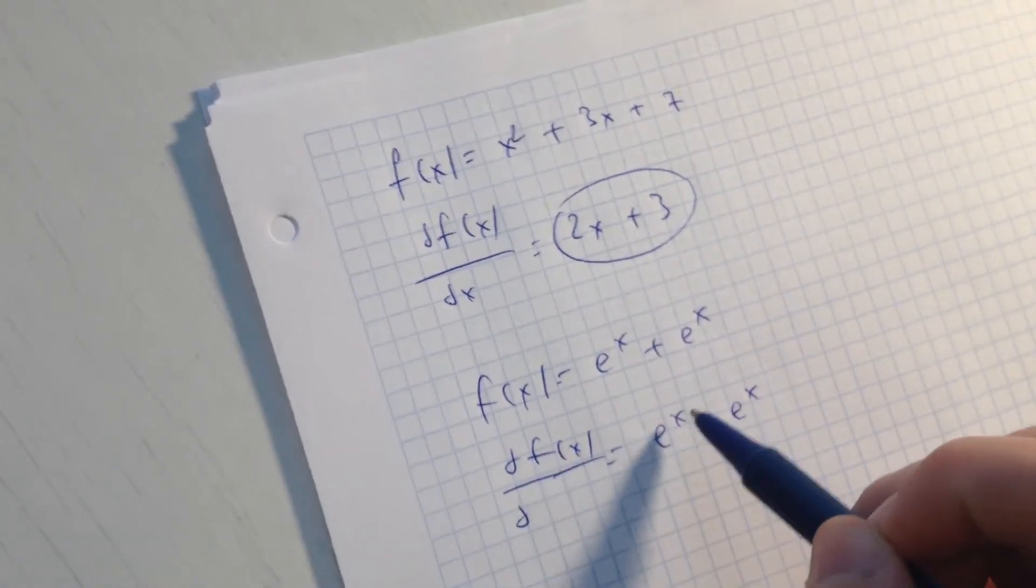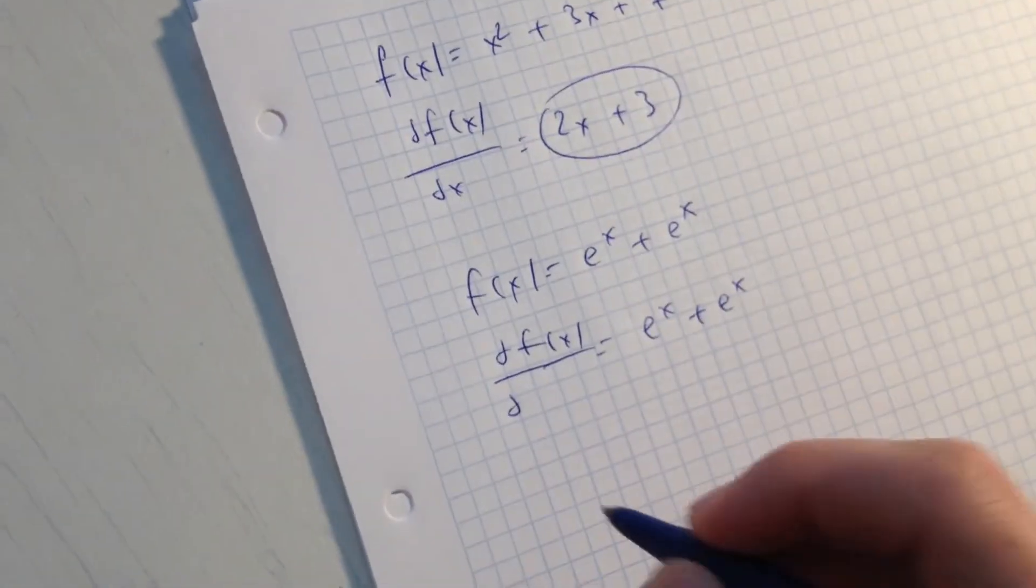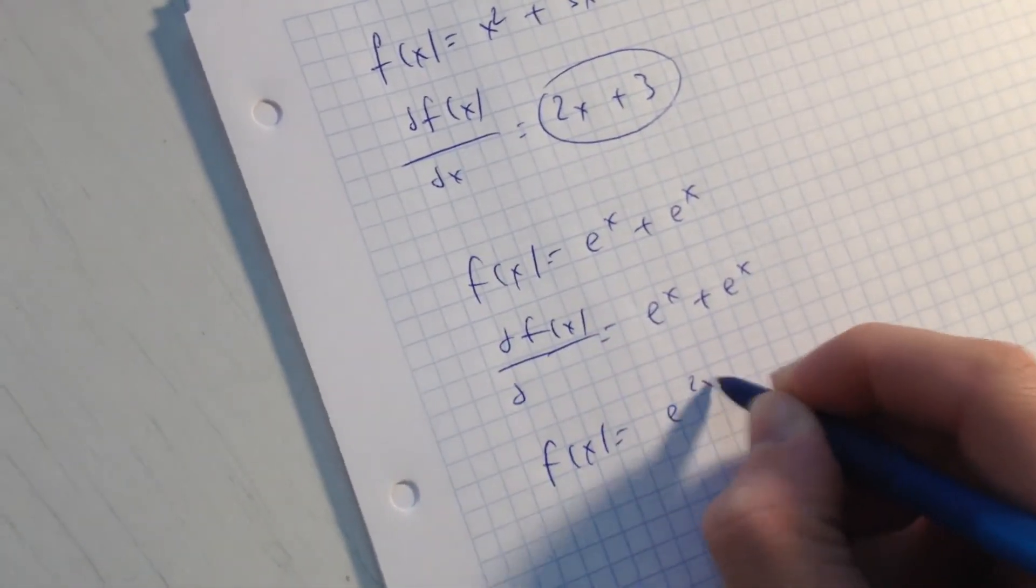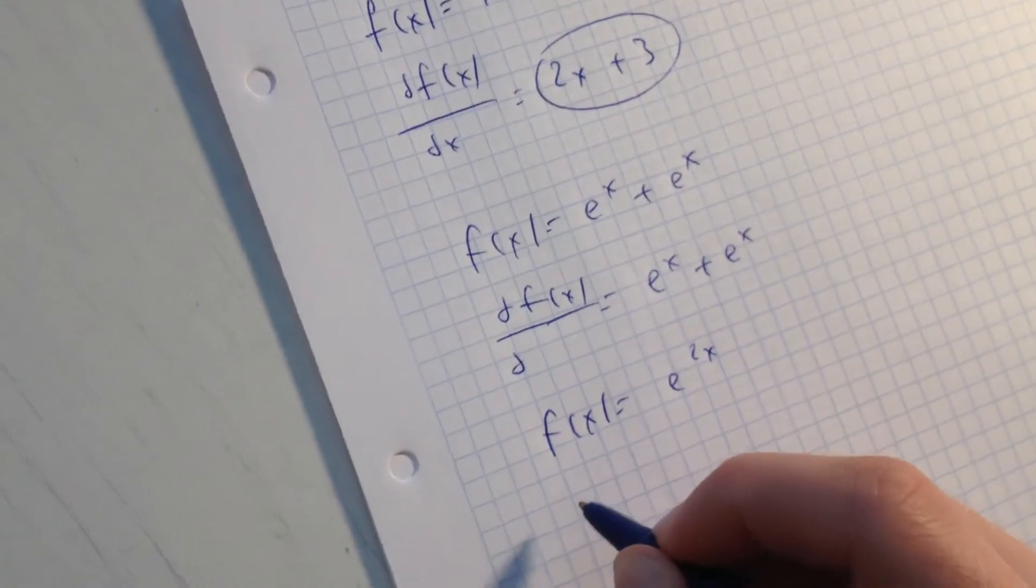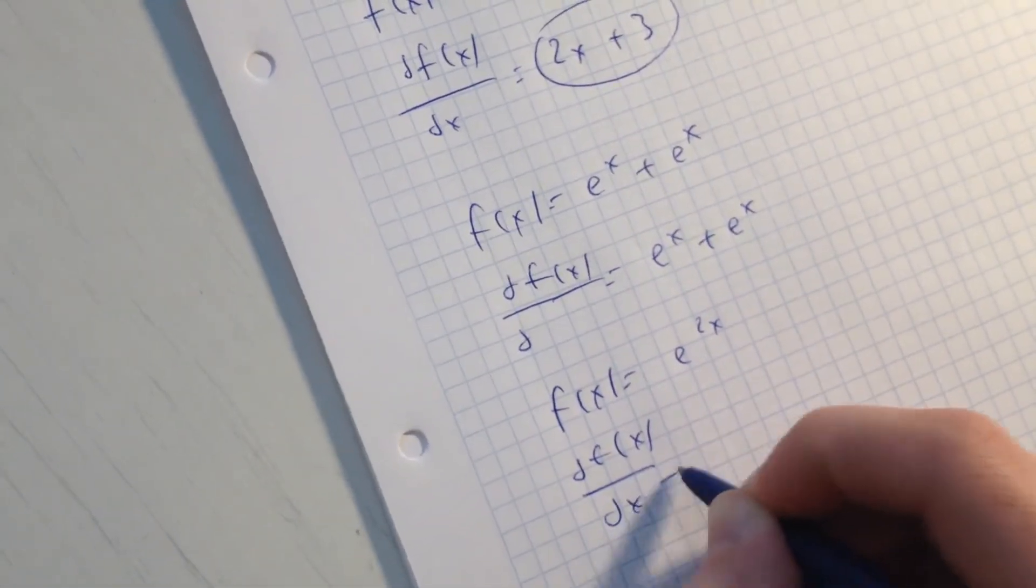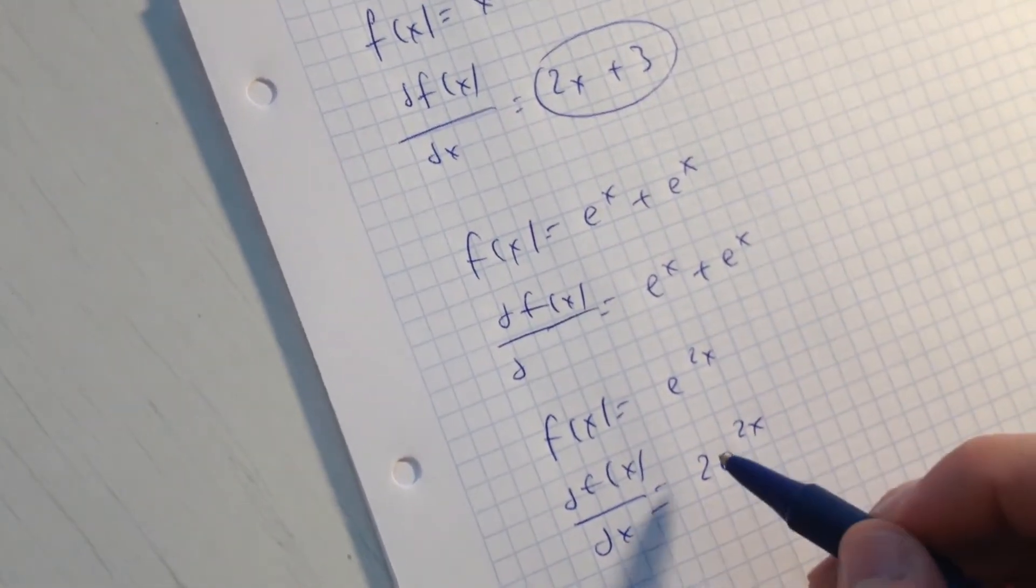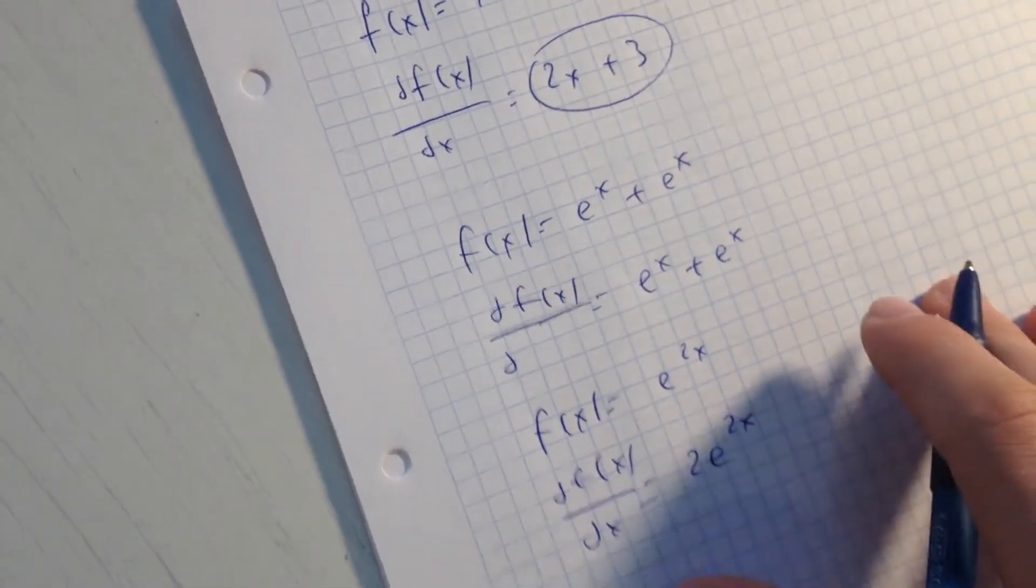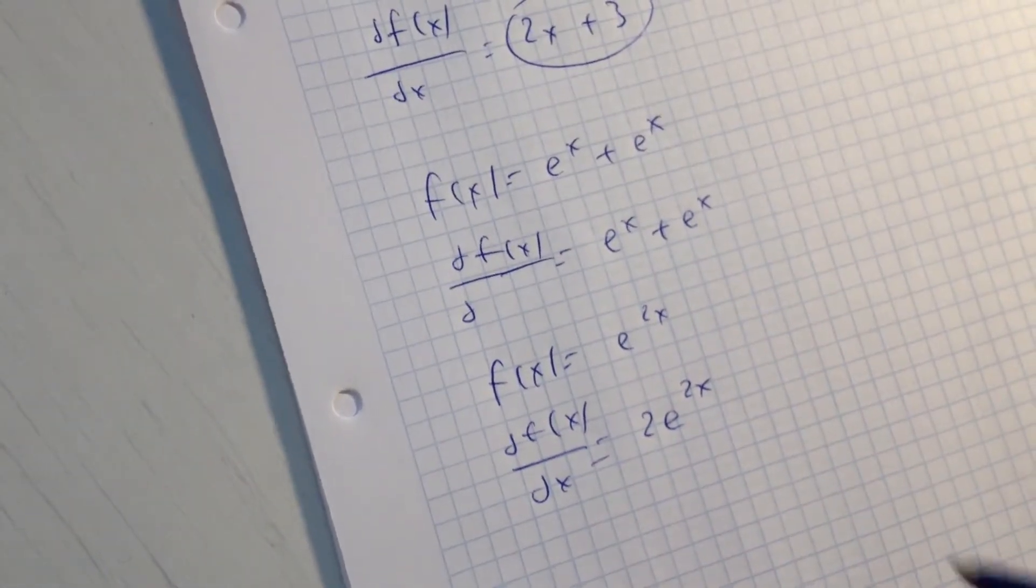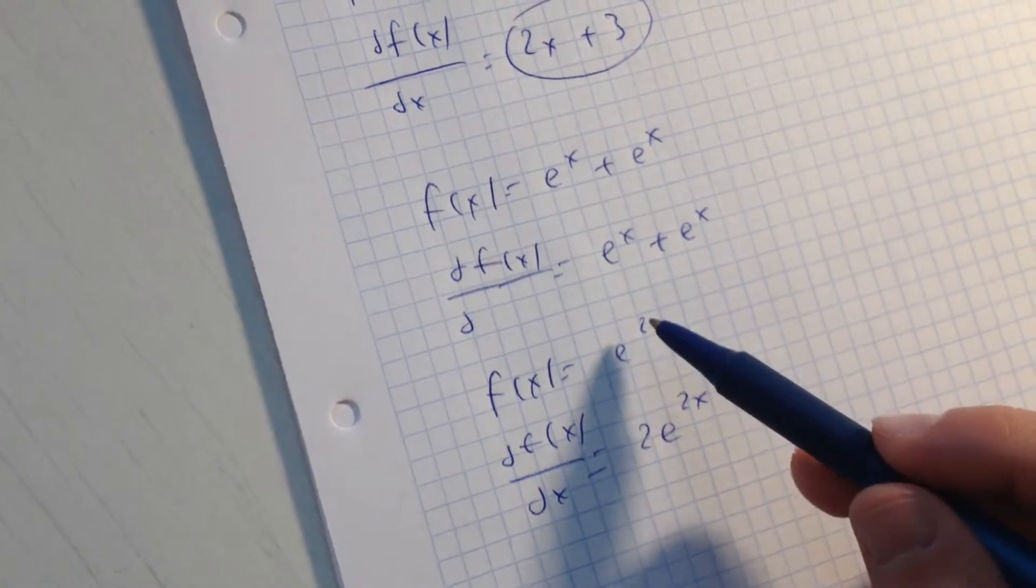it should be just e to the power of x. But if you have such function, then the derivative of such function is going to be 2e to the 2x. And in the future we have to, for example,